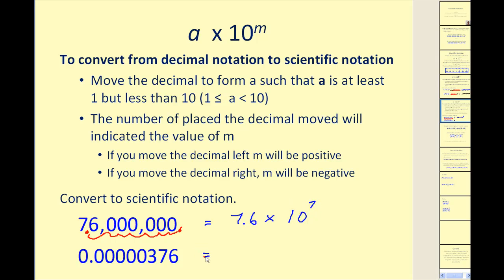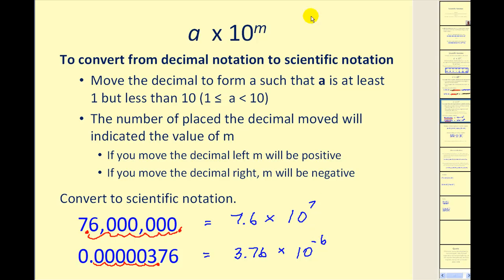In the second example, to form a number that is at least 1 but less than 10, the decimal would have to be placed here, giving a value of A equal to 3.76. This is a very small number, which indicates this will be a negative exponent. Counting the number of places we had to move to the right: one, two, three, four, five, six. Therefore our exponent is negative 6.